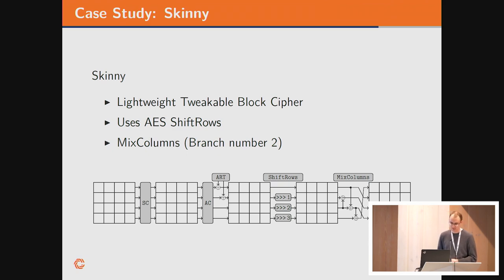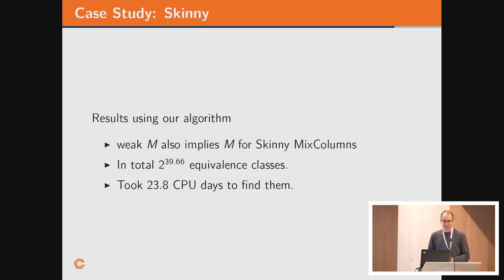The second example we looked at is the Skinny block cipher. It uses AES shift rows and a very sparse mixed column, so you only get a branch number of two. It's again an interesting choice here because the mixed column seems very simple and the shift rows is a bit structured. So maybe if you use a more generic permutation, you could improve the bounds. We applied again this algorithm to find all the equivalence classes. But in the case of Skinny, it turned out there are quite a lot more. It's almost 2 to the 40 equivalence classes. It already took 24 CPU days to find all these equivalence classes.